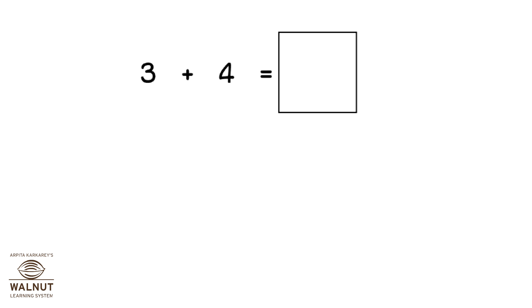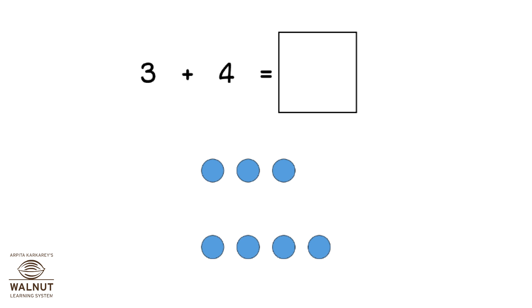We draw 3 dots. Then we draw 4 more dots. How many dots do we have? 1, 2, 3, 4, 5, 6, 7. We have 7 dots.